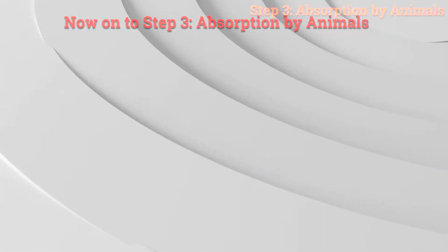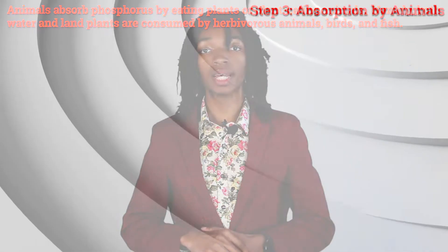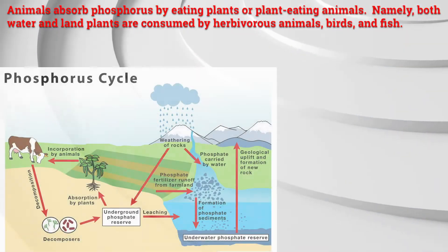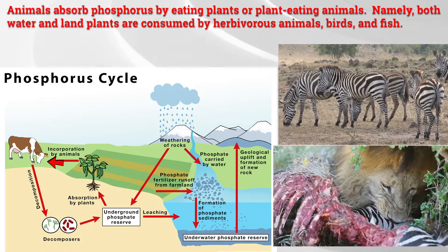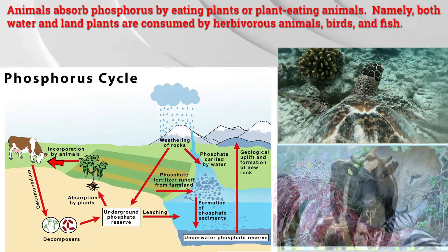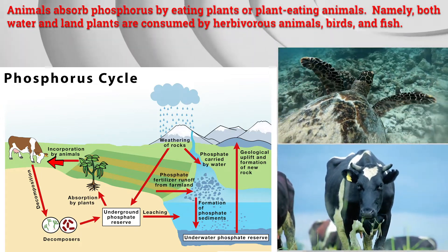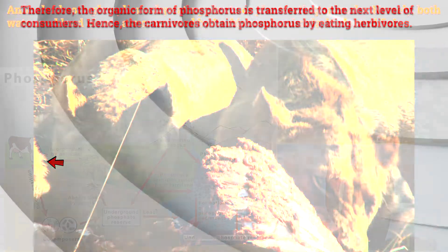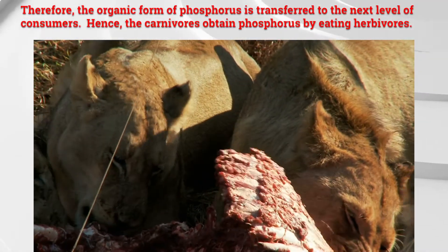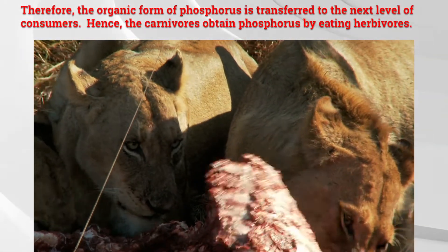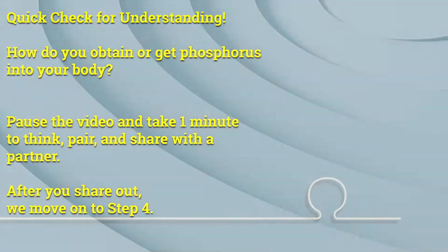Step 3: Absorption by animals. Animals absorb phosphorus by eating plants or plant-eating animals. Both water and land plants are consumed by herbivorous animals, birds, and fish. Therefore, the organic form of phosphorus is transferred to the next level of consumers. Hence, carnivores obtain phosphorus by eating herbivores.